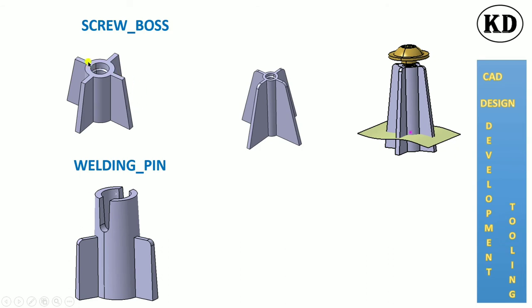Screw boss will be the next fixation type. There will be a screw boss where steps are given to the head of the screw. The origin point is on the top face of the screw boss. The gap between the screw boss and screw will equal the part thickness.